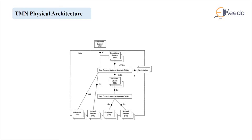If we consider the different types of blocks related to the physical architecture, we can observe that few blocks are the same as that of the functional architecture of TMN, but few blocks are added. For example, Operation System Functional Block (OSF) is the same. Q Adapter Block is the same. Network Element Block is the same. Network Element and Q Adapter Blocks are there, which are same. Meditation Devices Block is the same. Workstation Function Block is the same.